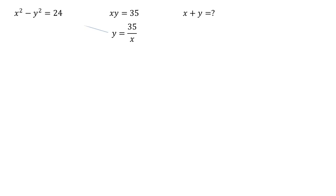We can now substitute that into our other equation to give us x squared minus 35 over x all squared equals 24.